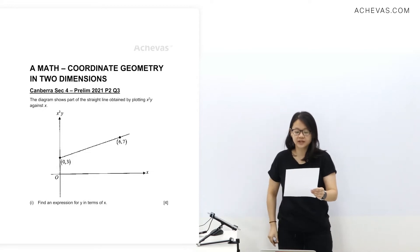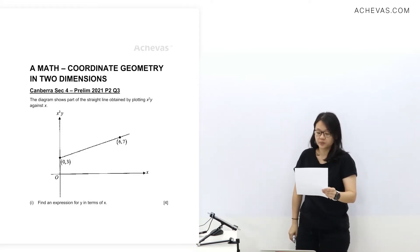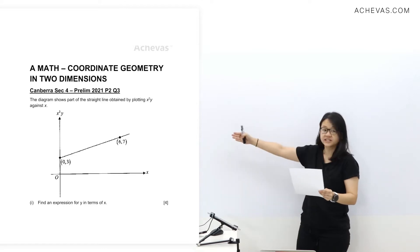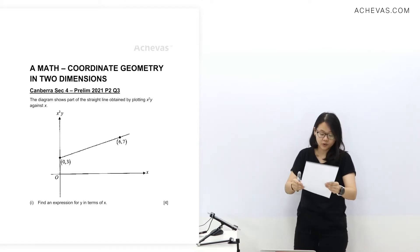The diagram shows part of the straight line obtained by plotting x squared y against x, as you can see there in the picture. Question 1: find an expression for y in terms of x.